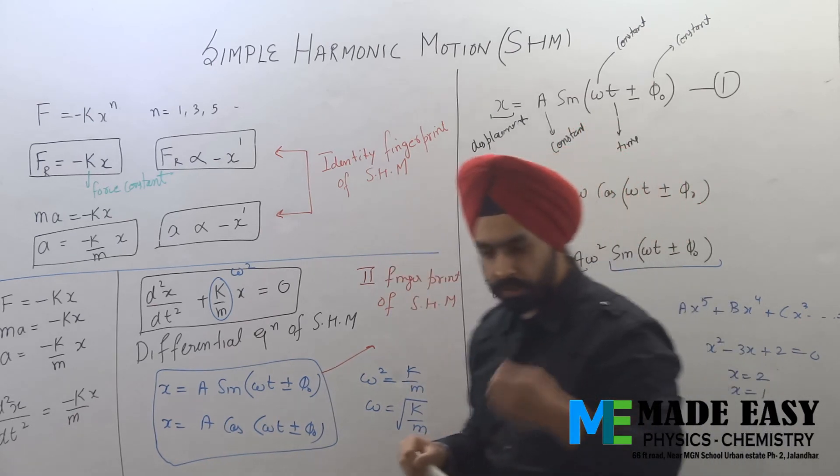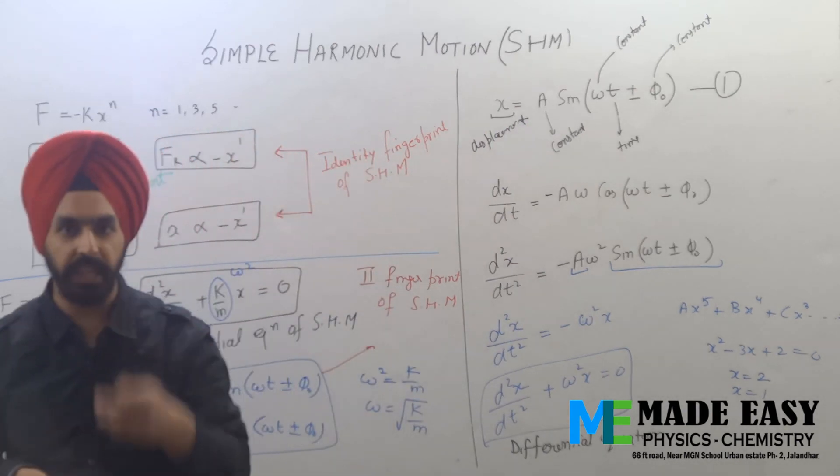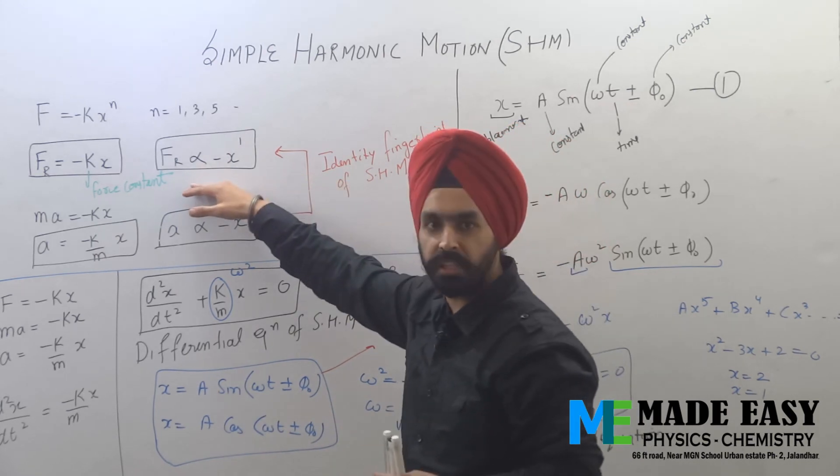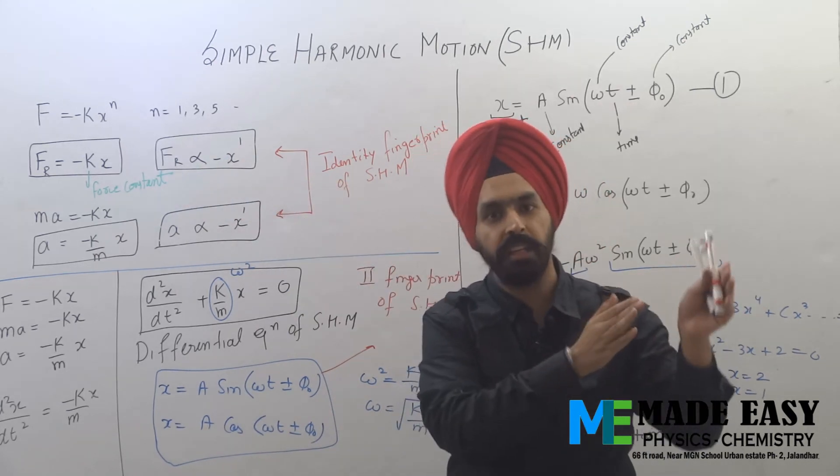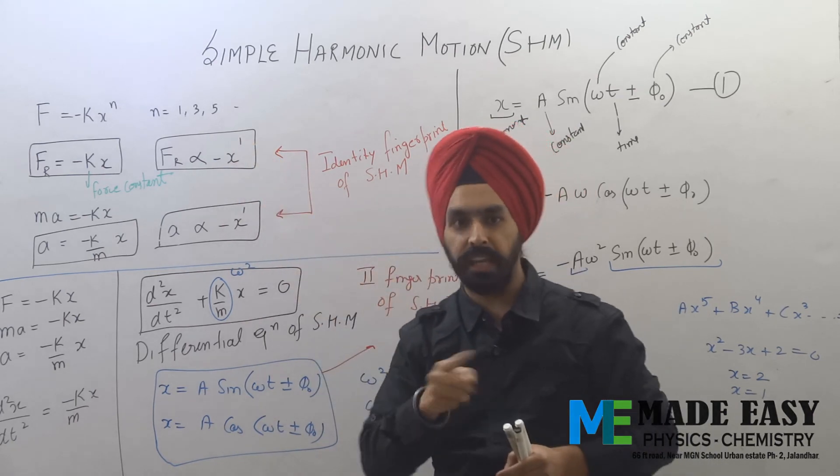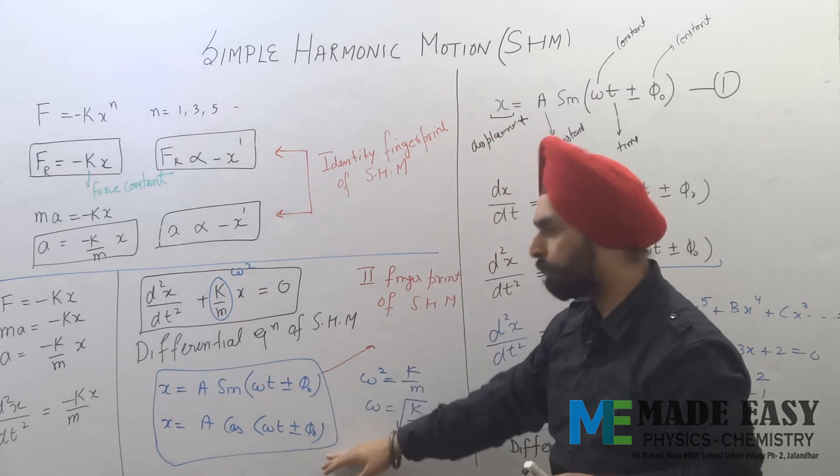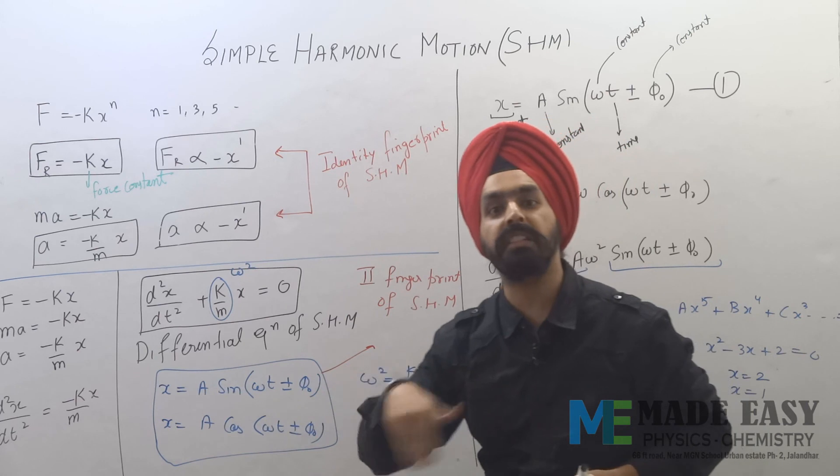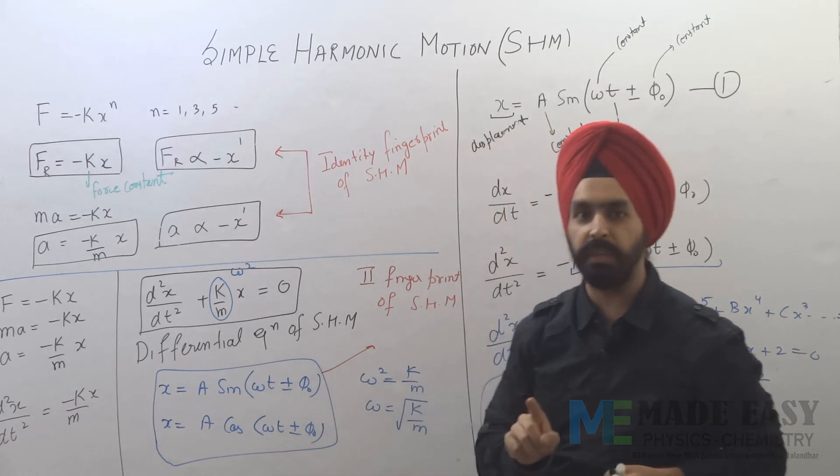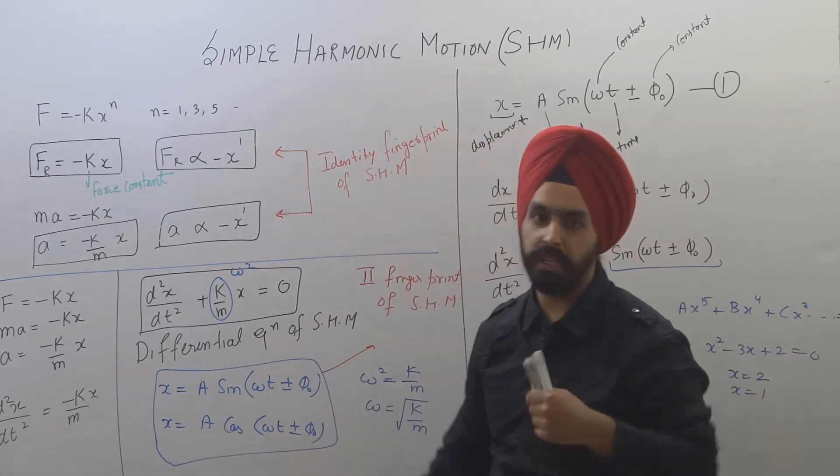So if you're given any particular motion and asked whether it's SHM or not, you have two options. Either check the restoring force - displace it slightly and check if the restoring force is directly proportional to displacement power 1. If it is, it's simple harmonic motion, otherwise it's not. The other option is to see how position changes with time. If it changes according to this equation, then it's SHM, otherwise it's not SHM. In the next lecture, we will elaborate on this equation.